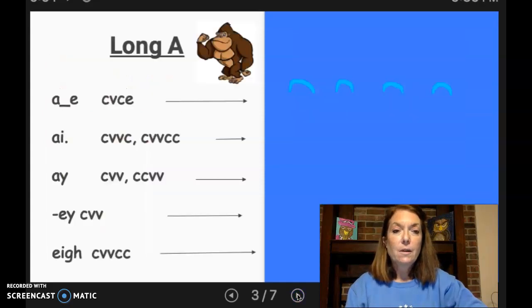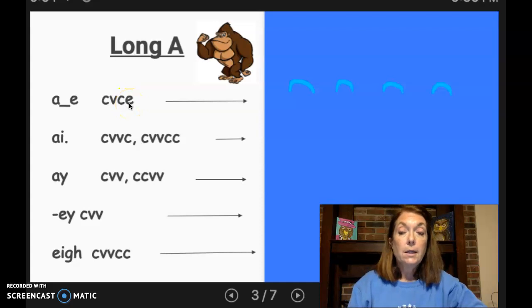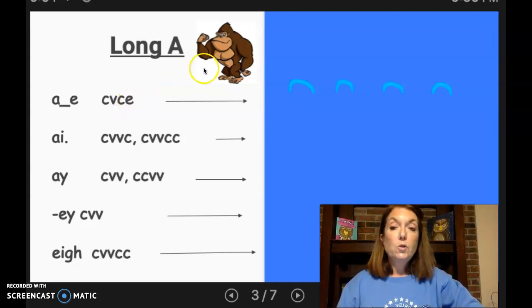Let's start with long A. There's many spellings for the long A sound. Let's start first with A blank E and that is consonant, vowel, consonant, and E. And the E is a silent E. And I like to say that E is so strong, like this ape, that it gives its sound to the vowel right here. So it makes it say your name.